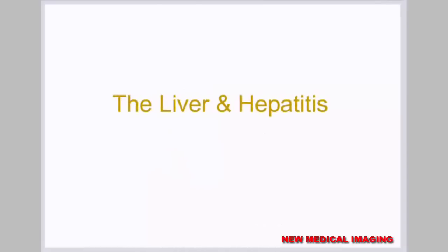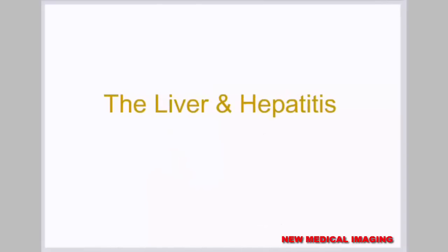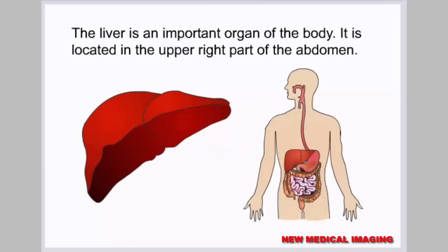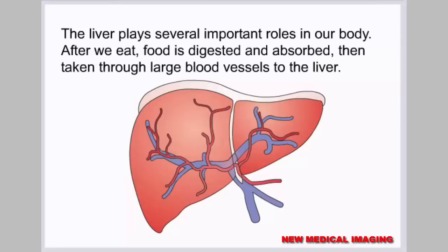The liver is an important organ of the body. It is located in the upper right part of the abdomen. The liver plays several important roles in our body. After we eat, food is digested and absorbed, then taken through large blood vessels to the liver.